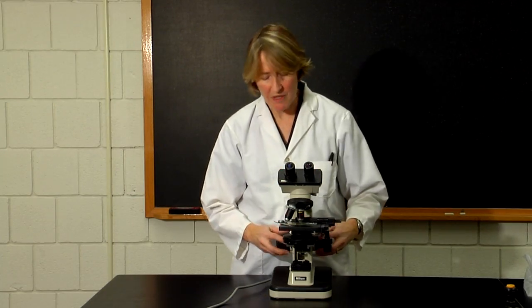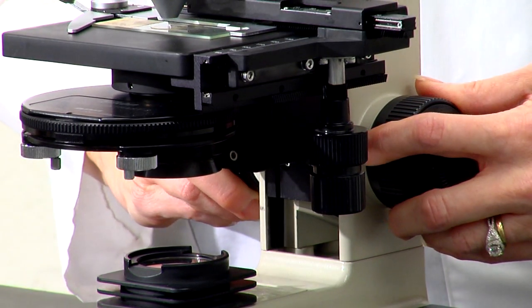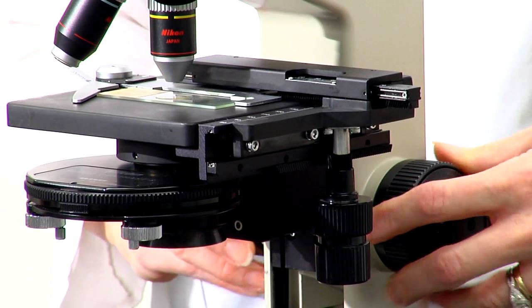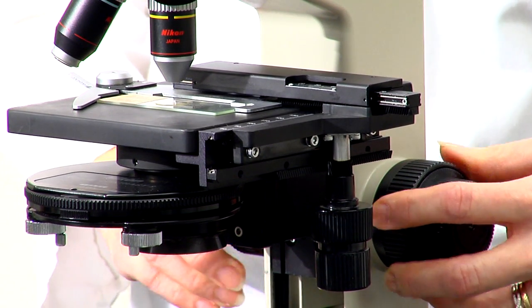Looking through the eyepiece, you should use the coarse adjustment knob to get the sample into focus. Notice that by starting with the stage in the highest position, as you move the coarse adjustment knob, the stage moves away from the lens. This decreases the possibility that you could potentially smash the lens into your slide.